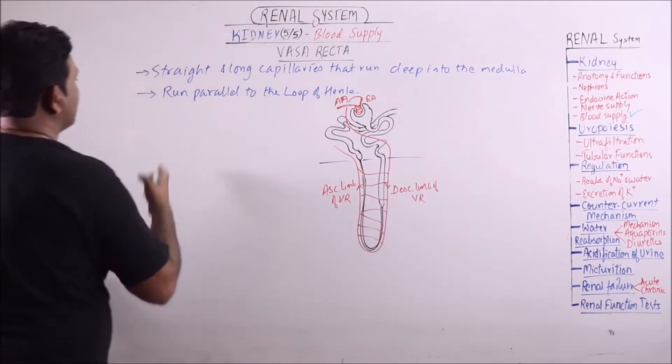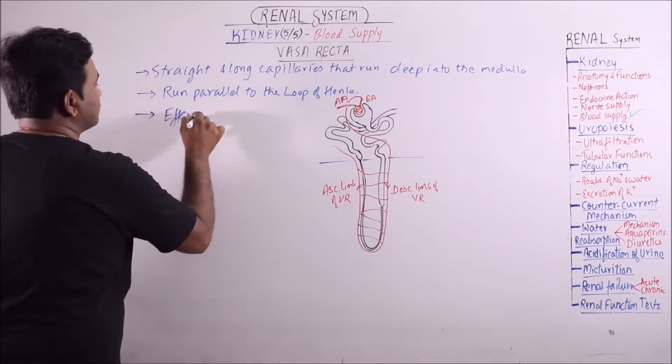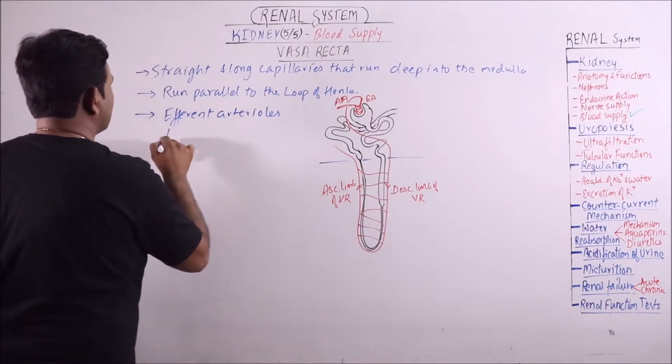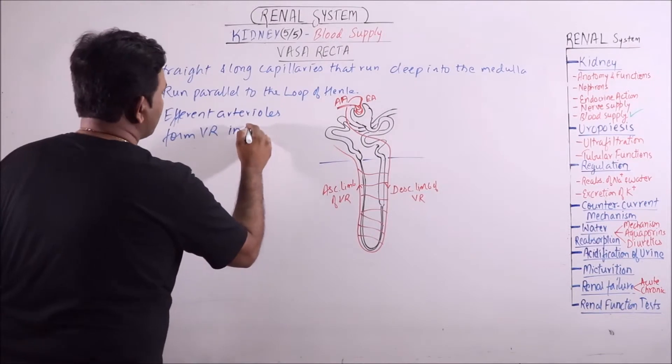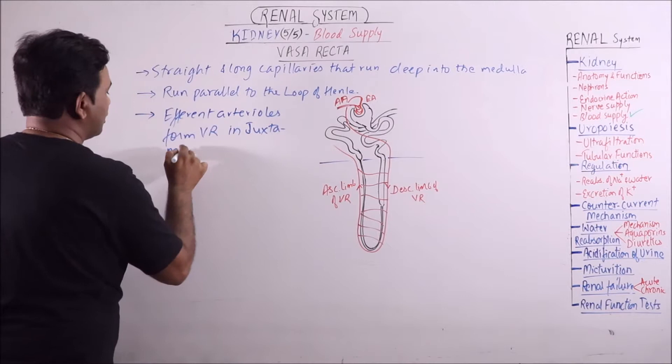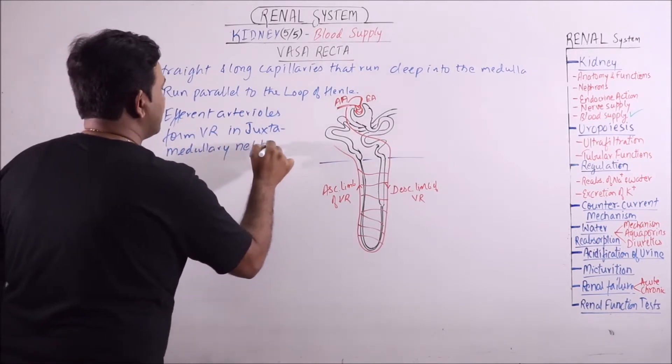So the efferent arteriole forms Vasarecta in juxtamedullary nephrons.